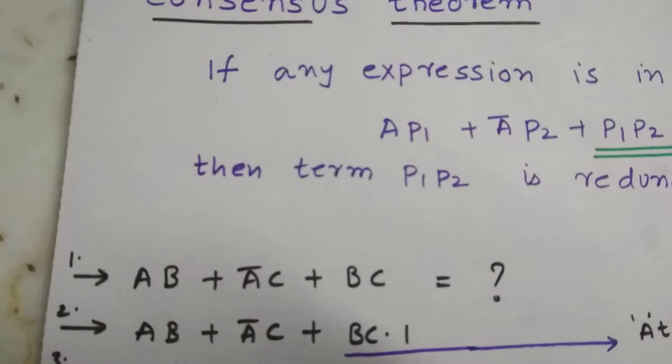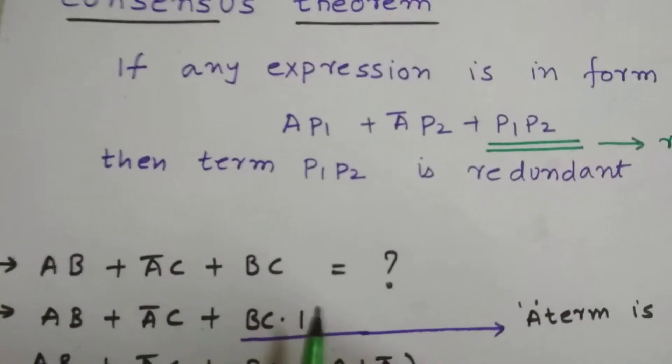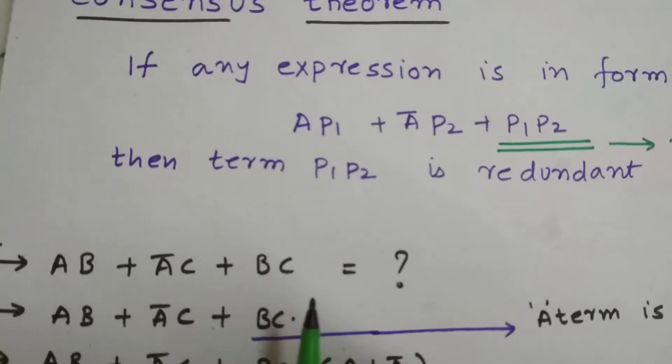So we are going to multiply it with 1 because we want an A term. A term is missing in the third term, so we'll get the A term.